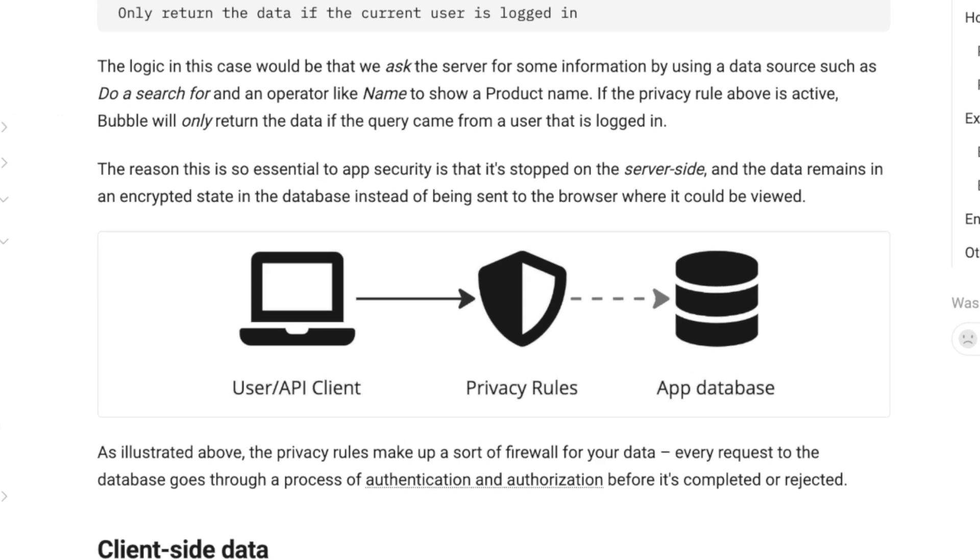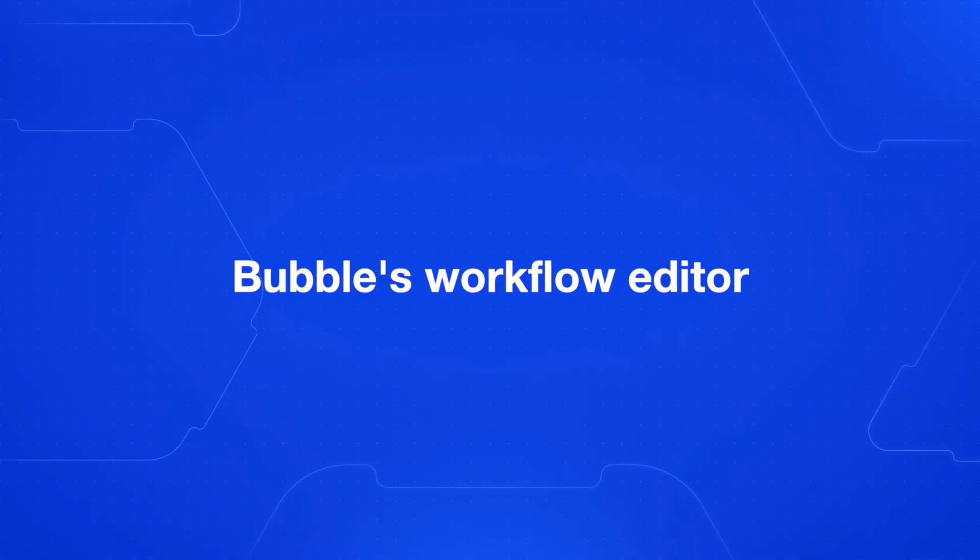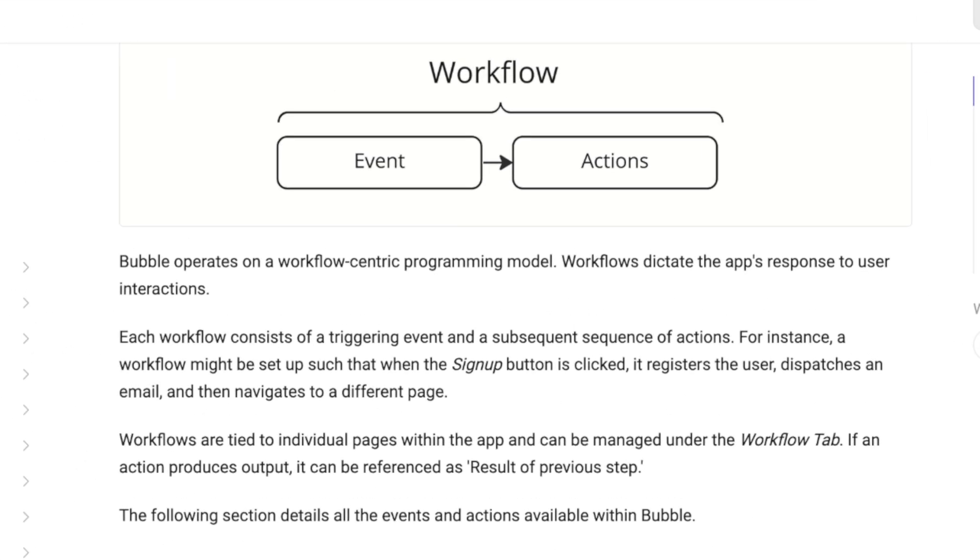There's also something called privacy rules in Bubble, which allows you to control access to your data based on user roles or other conditions. This is really important to set up correctly — if you don't set up your privacy rules correctly, then anyone with a little coding knowledge can see data in your database that should be private, which is something we cover inside NoCodeMBA. The workflow editor is where you define the logic of your app. Bubble allows you to trigger workflows by a variety of things such as button clicks, page loads, or data changes.